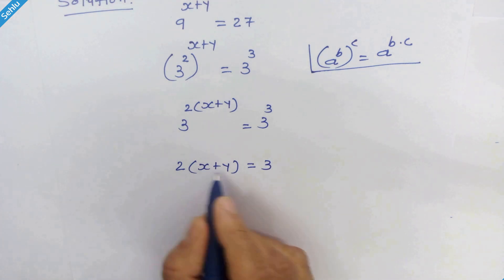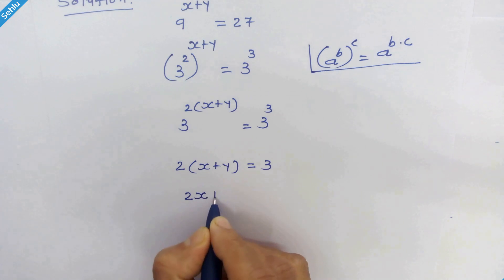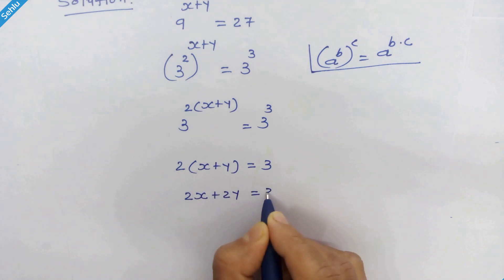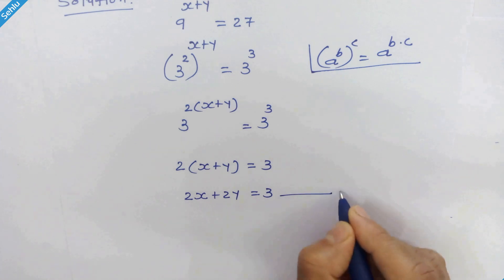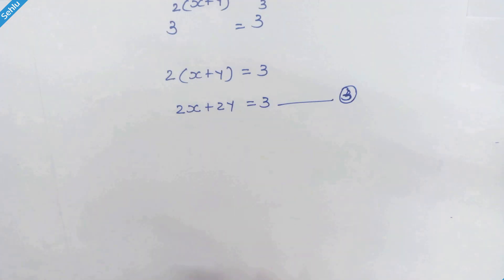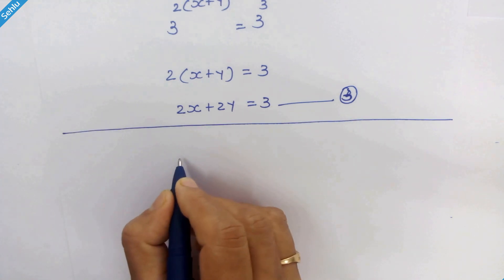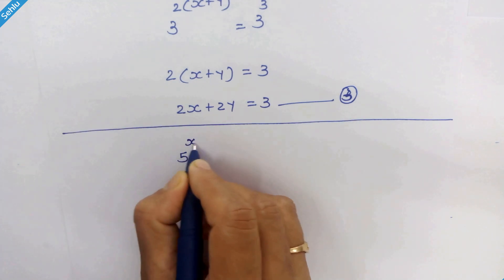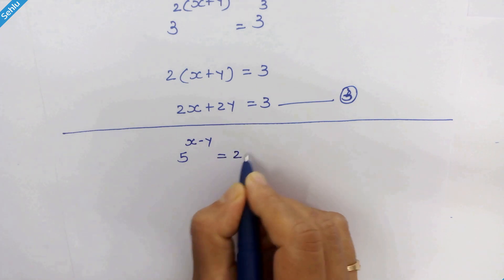Expanding the bracket, we get 2x plus 2y is equal to 3. Let's call this equation 3. Now let's work on equation 2, which is 5 raised to x minus y is equal to 25.